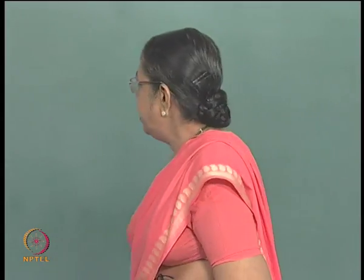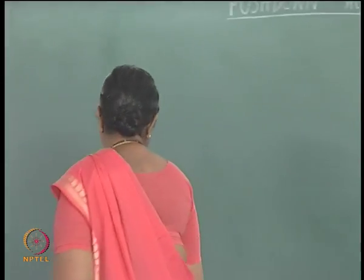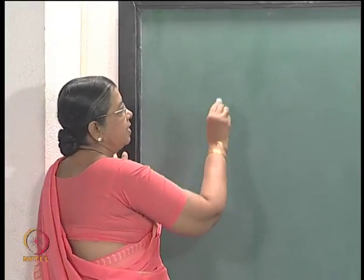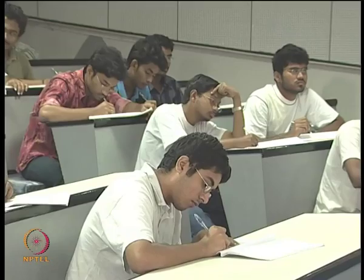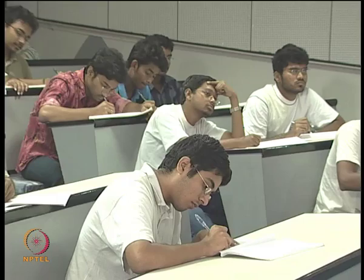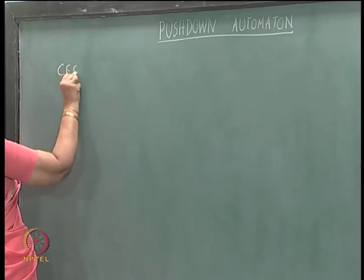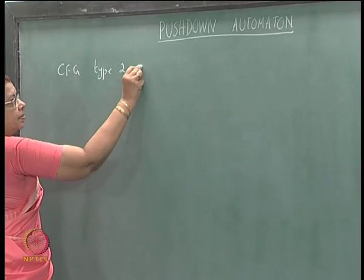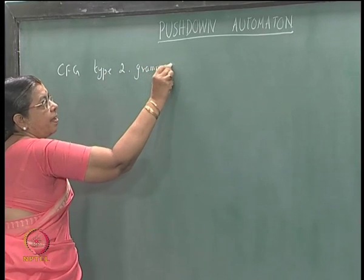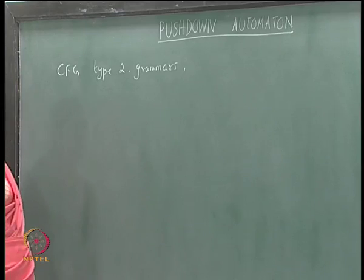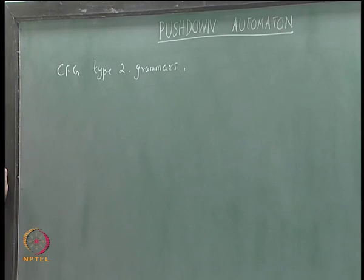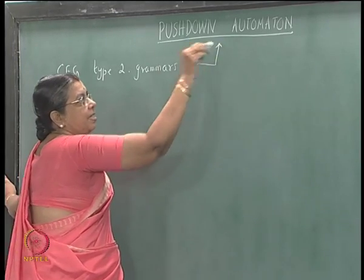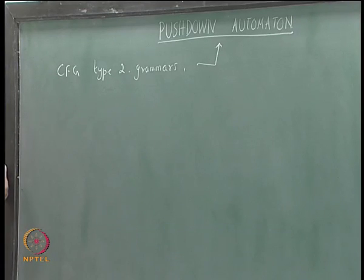Today we shall consider pushdown automaton. We have seen that the smallest machine or accepting device you can think of is the finite state automaton, and it corresponds to type 3 grammars. Now, what about context free grammars or type 2 grammars? The machine which corresponds to this, or the accepting device corresponding to context free grammars, is the pushdown automaton.